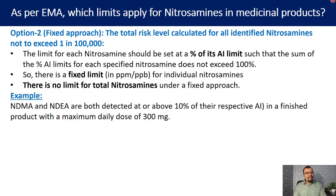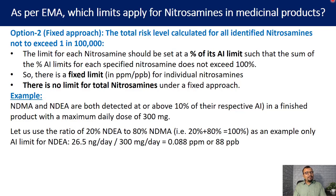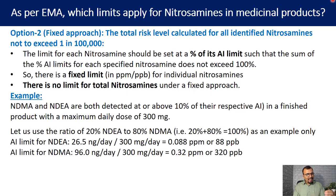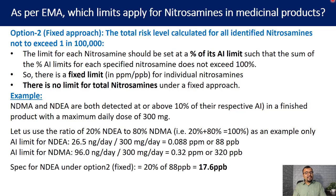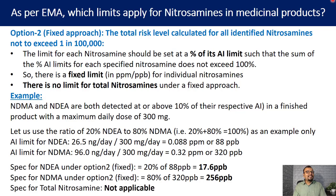For example, consider a product containing NDMA and NDEA with a maximum daily dose of 300 mg, assuming a ratio of 20% NDEA and 80% NDMA. The acceptable intake limit for NDEA is 88 ppb and for NDMA is 320 ppb. Under option 2 fixed approach: the specification for NDEA is 20% of 88 ppb = 17.6 ppb, and for NDMA it is 80% of 320 ppb = 256 ppb. This is how individual limits are calculated using option 2 fixed approach, with no need to set a total nitrosamine limit.